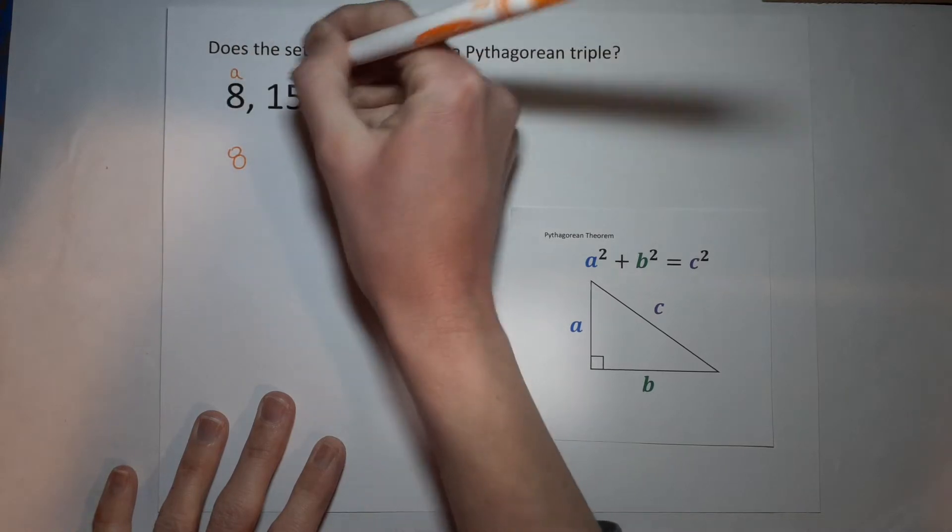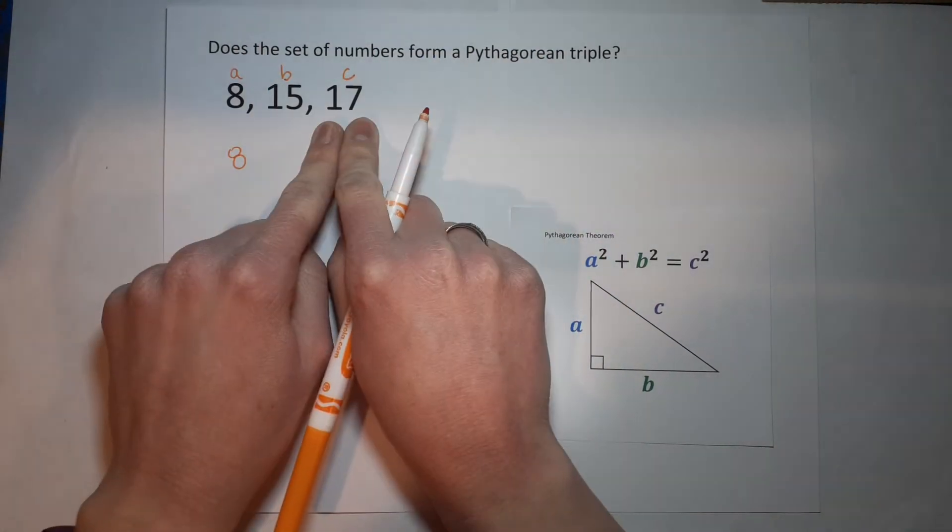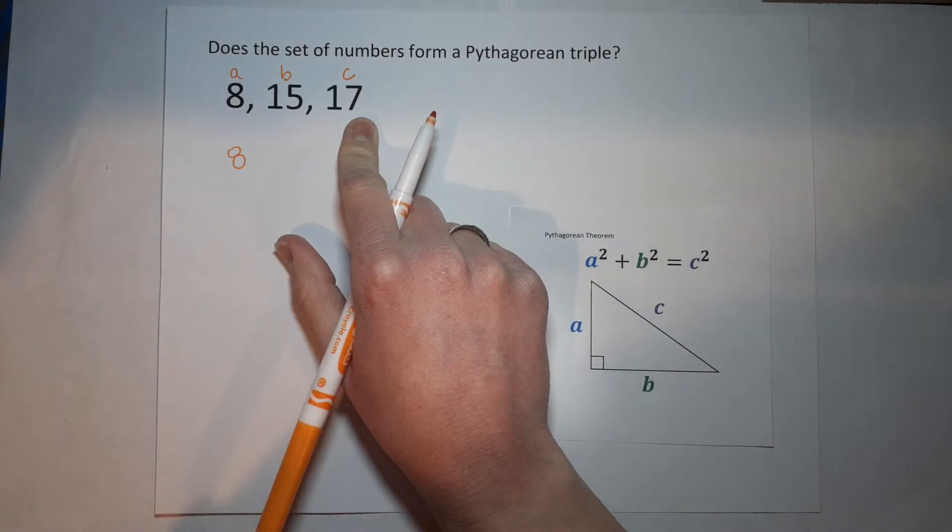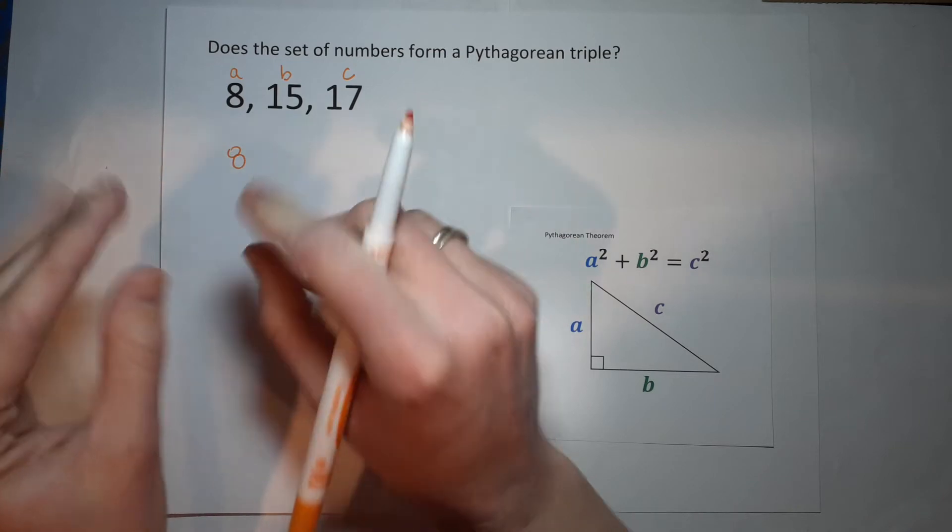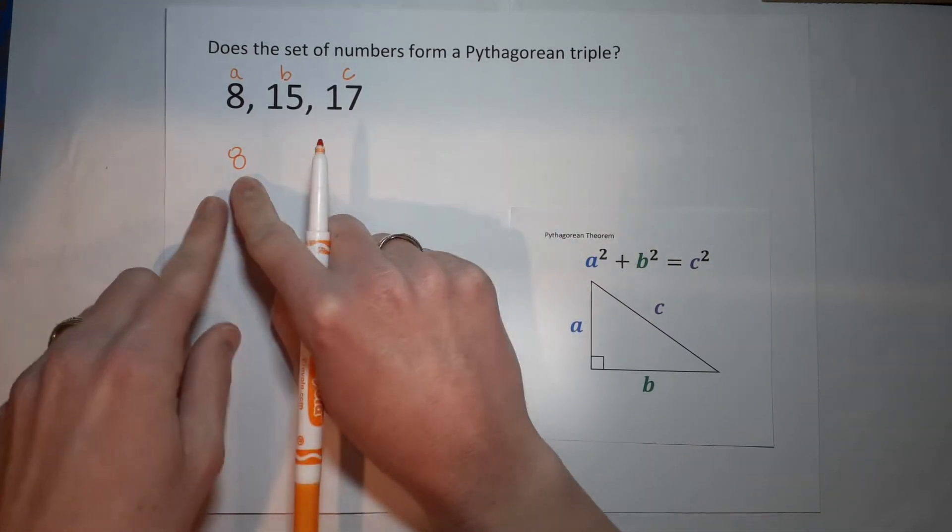So I've got my 8, sorry I got a little ahead of myself, A, B, and C. I know 17 is C because it is the longest side, the biggest number. So if this is a right triangle, 17 would be my hypotenuse. So here we go.